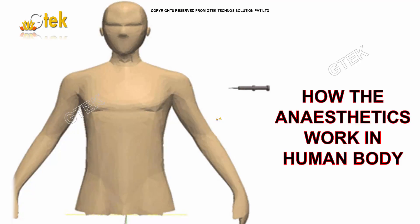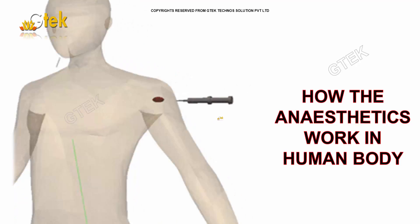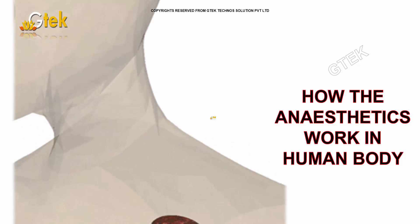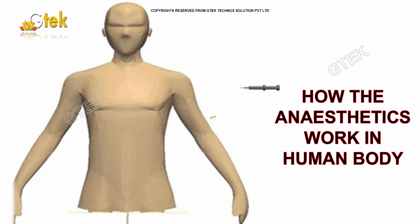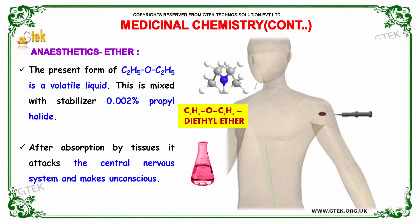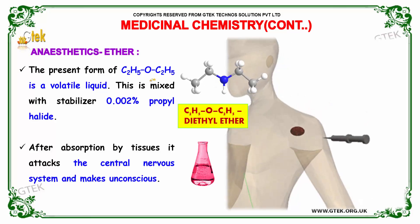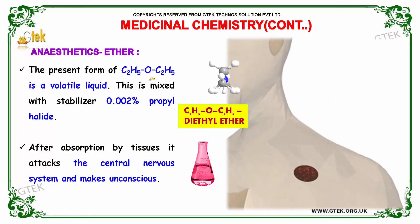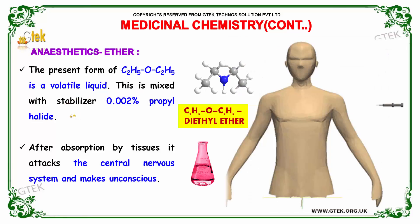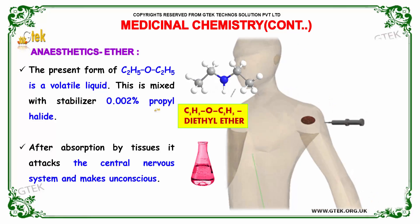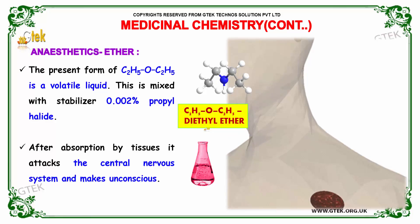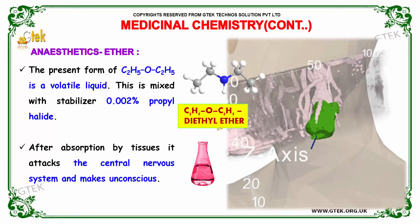This shows the working of anesthetics in the human body. Ether, with the formula C2H5-O-C2H5, is a volatile liquid mixed with a stabilizer of 0.002 percent propyl halide. After absorption by tissues, it attacks the central nervous system and renders it unconscious.